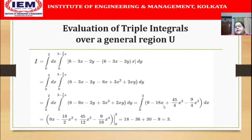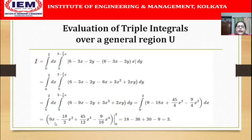This expression is integrated with respect to x from 0 to 2, giving 9x - 18x²/2 + (45/12)x³ - (9/16)x⁴. Putting in the limits, the final answer comes out to be 3.